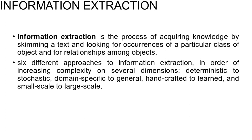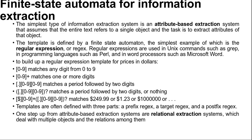There are six different approaches to information extraction in order of increasing complexity on several dimensions: deterministic to stochastic, domain-specific to general, and handcrafted to learned, and small-scale to large-scale. Starting with our first topic: finite state automata for information extraction. The simplest type is an attribute-based extraction system. This assumes the entire text refers to a single object and the task is to extract attributes of that object, such as from the text 'IBM ThinkBook 970' with a price of $399.